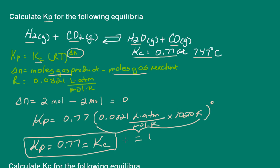I didn't even need to do the calculation in this case, because when I have an equal number of moles of product gas and reactant gas, then delta N is zero. So any time delta N is zero, then Kp and Kc are going to be equal.